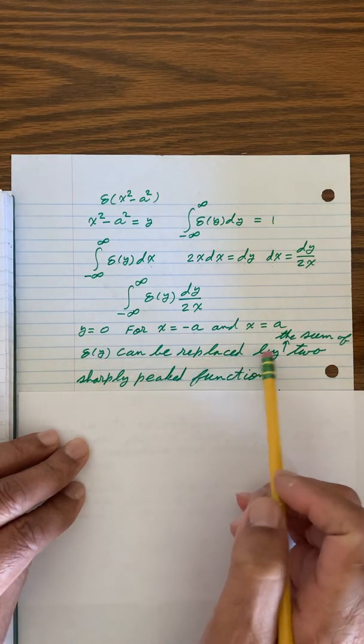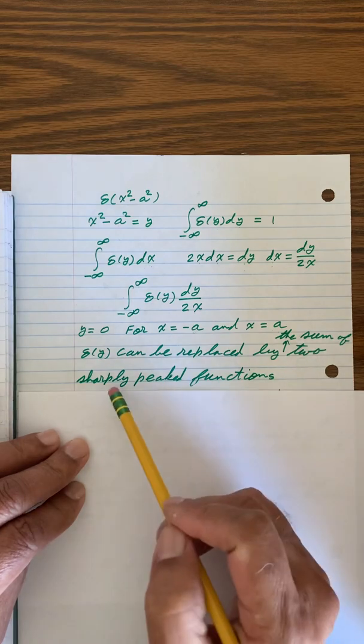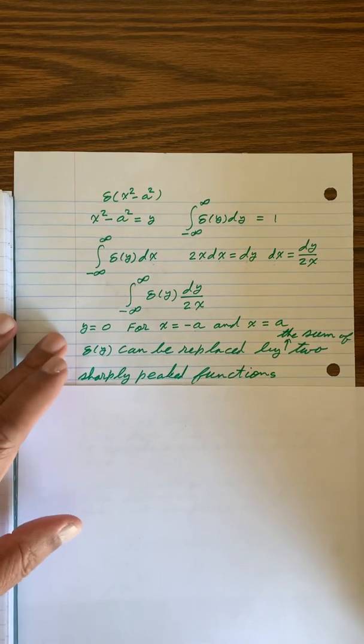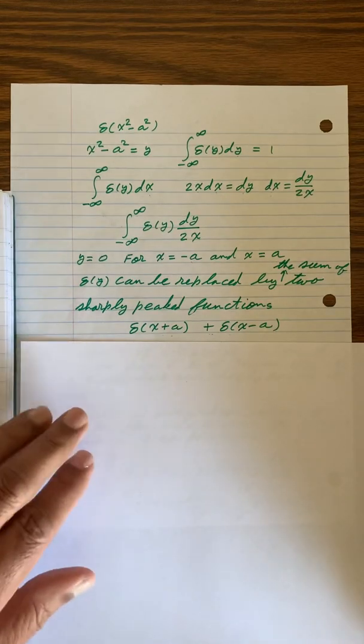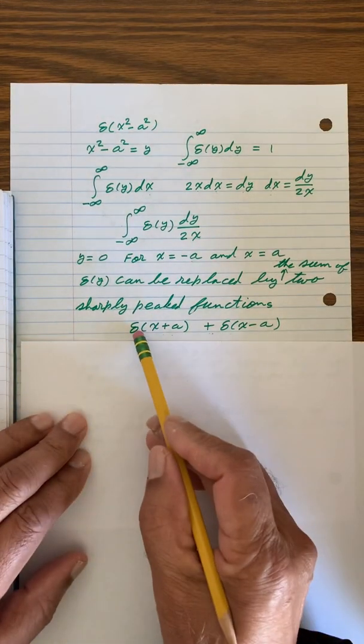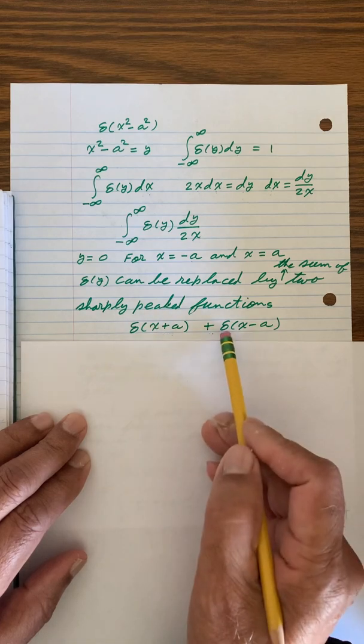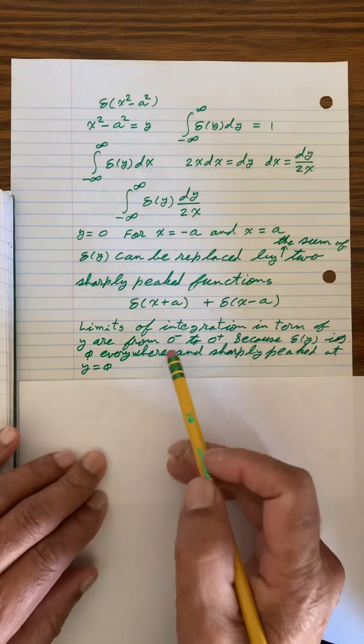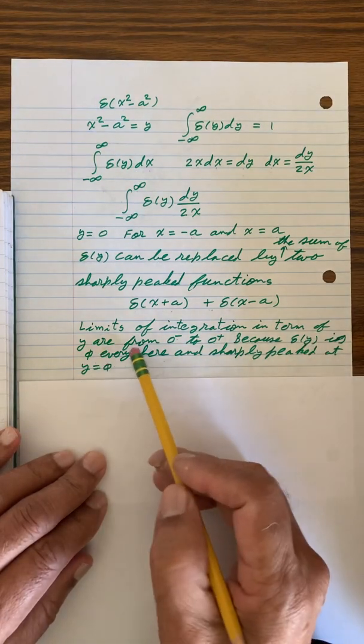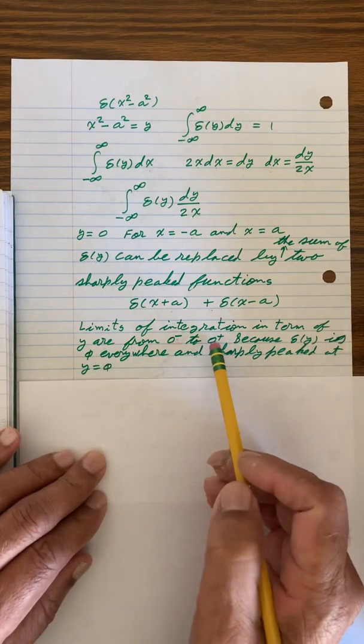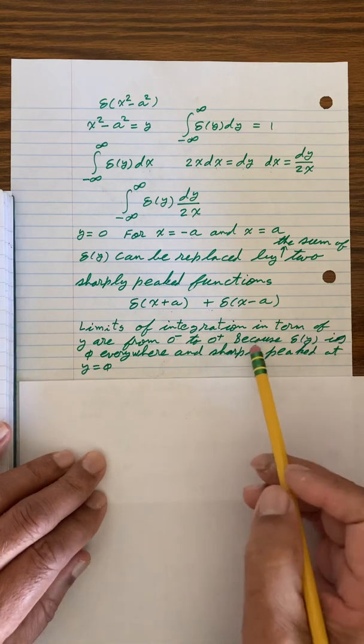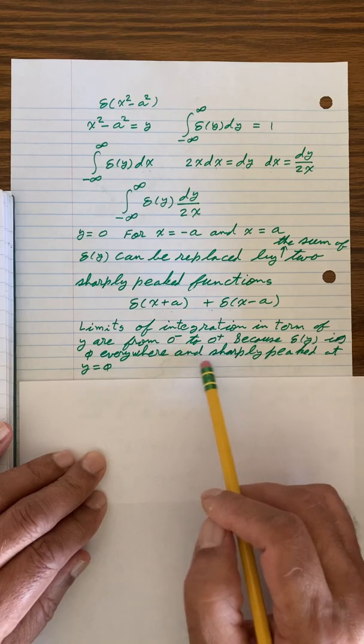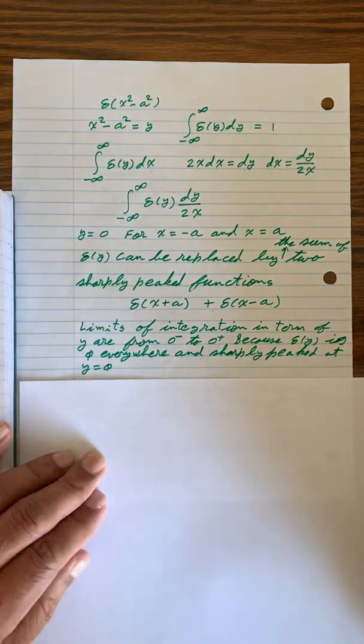Delta y can be replaced by the sum of two sharply peaked functions. So that can be represented as delta of x plus a, delta of x minus a. Limits of integration in terms of y are 0 minus to 0 plus. Because delta y is 0 everywhere, and sharply peaked at y equal to 0.